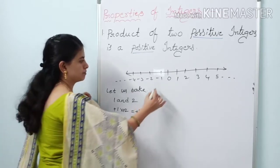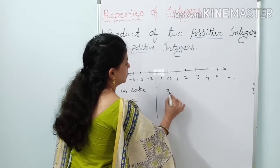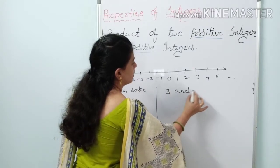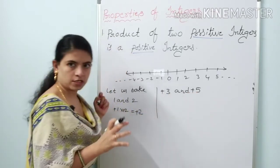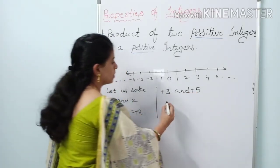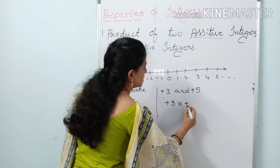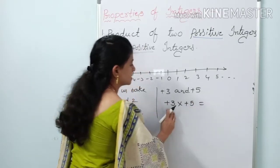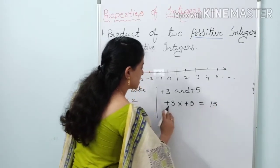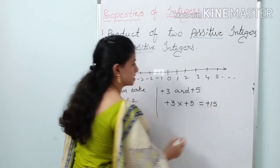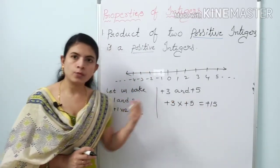Let us take another example: 3 and 5. Plus 3 and plus 5 — both are positive integers. Applying multiplication: plus 3 into plus 5 equals 15. Plus into plus gives plus. So the product of two positive integers is positive.